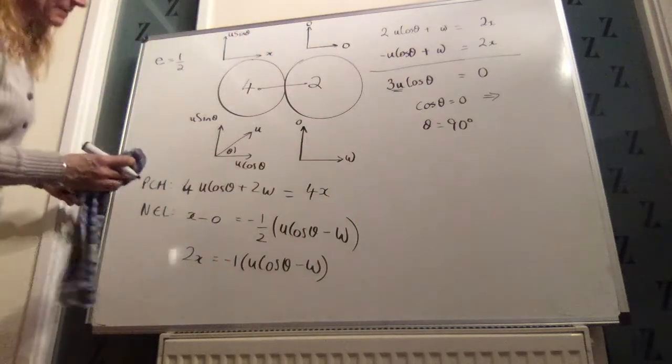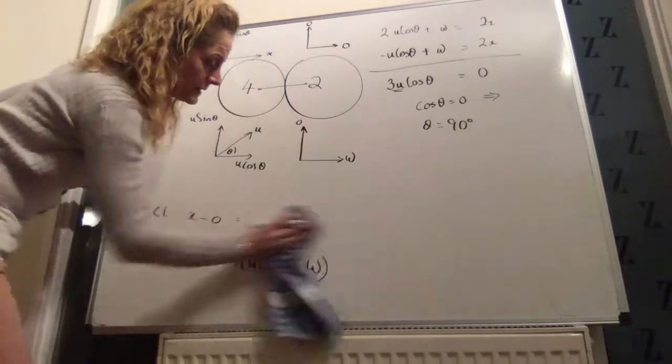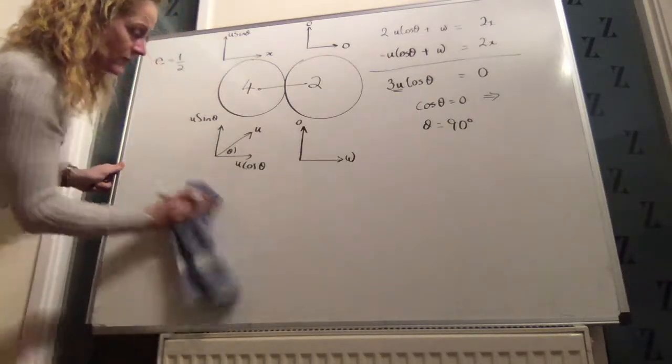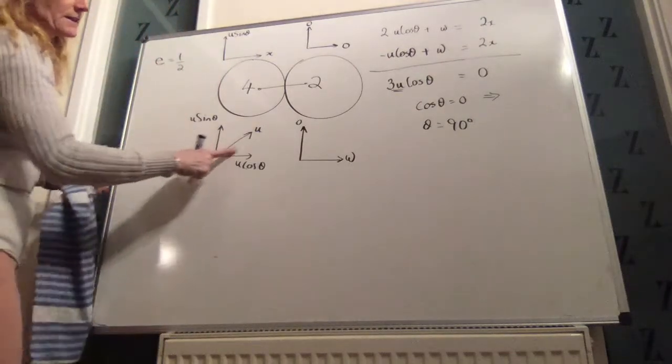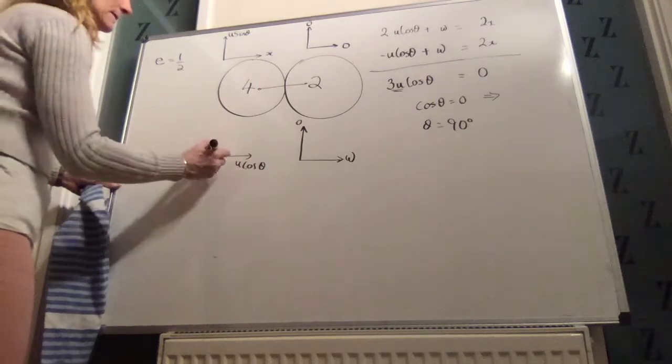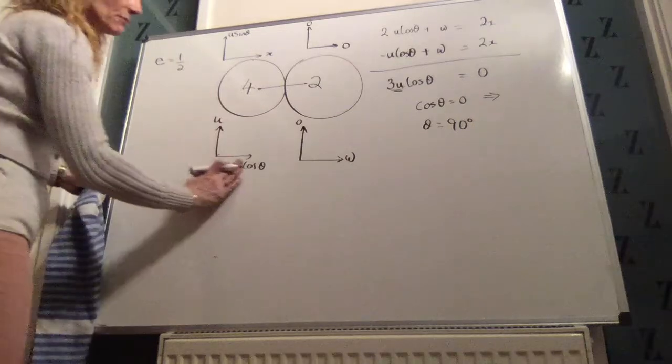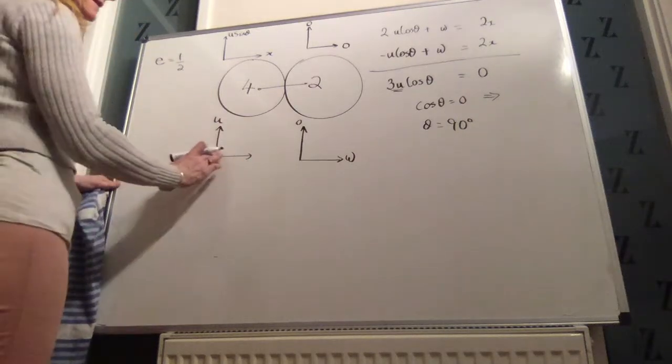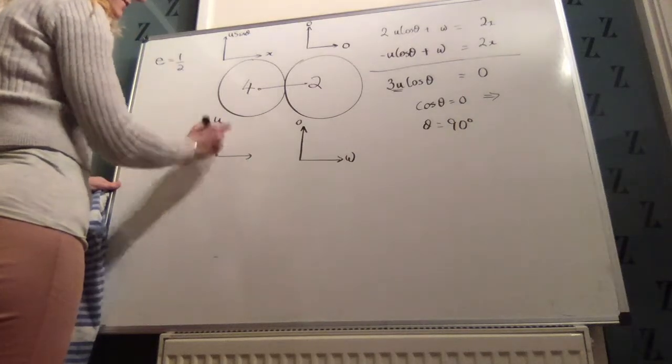That basically means that if we draw our diagram, I'm going to rub this out now. If we look back now, if theta is 90, that means our u must actually be like this. That's the only way it'll work when the theta is 90. So, that's our u. So, effectively, that's 0.